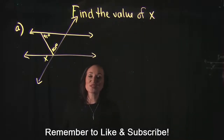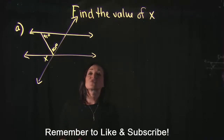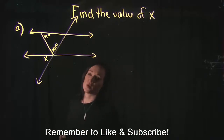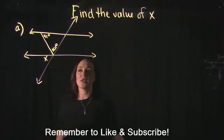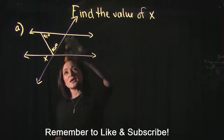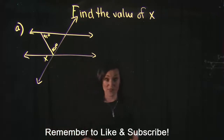This video focuses on how to find the missing value of X when given a few lines and angles. Looking at the example on the board, I notice two lines going straight across — these are parallel lines. There is also a line cutting through them, which is known as a transversal, and it creates a few relationships we can use to figure out the missing values.